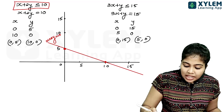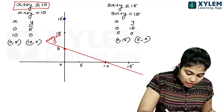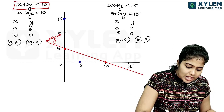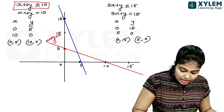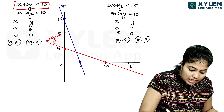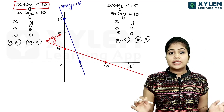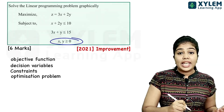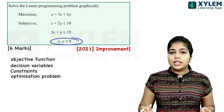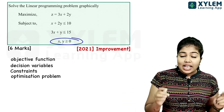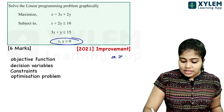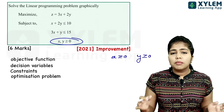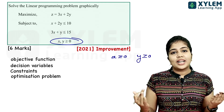The second line has points 0, 15 and 5, 0. The line 3x plus y equal to 15 is drawn. The constraint x, y greater than or equal to 0 means the value of x and y is equal to 0 or more — this restricts us to the first quadrant.